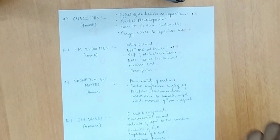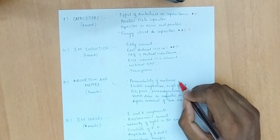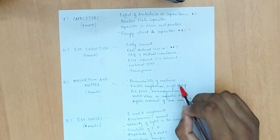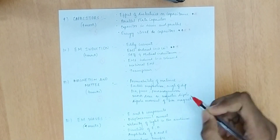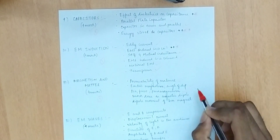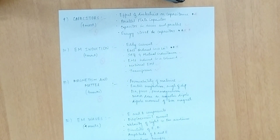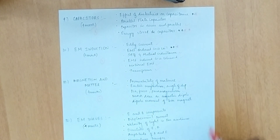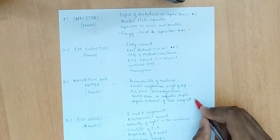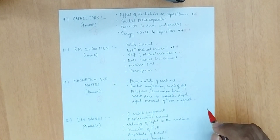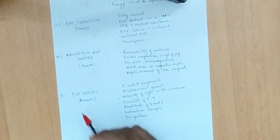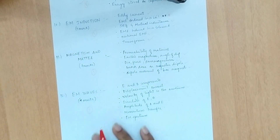For magnetism and matter, one question is expected. Topics include permeability of a material, Earth's magnetism, angle of dip, diamagnetism and paramagnetism, and magnetic dipole moment of a bar magnet.